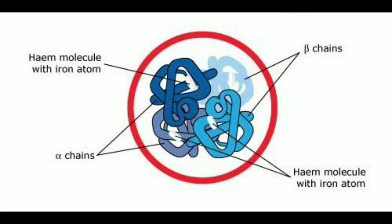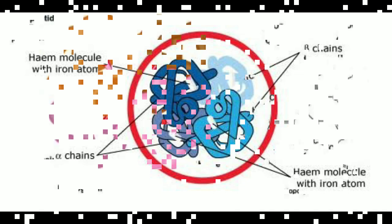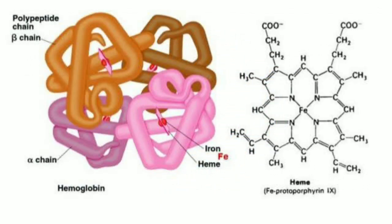Depending on amino acid composition, there are different types of chains: alpha, beta, gamma, and delta chains. In the adult human being, the most common form of hemoglobin is hemoglobin A, which consists of alpha and beta chains. Each heme in the hemoglobin molecule contains iron.